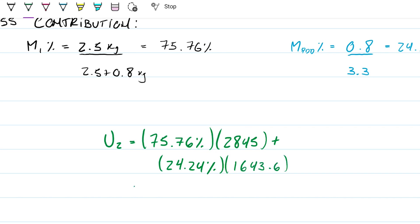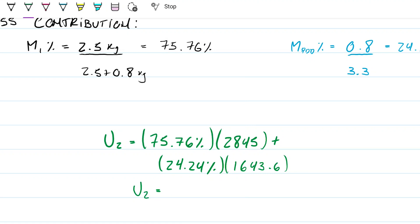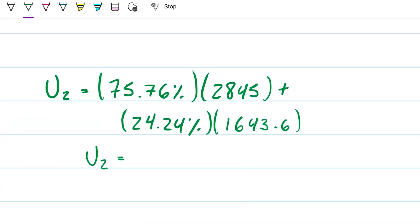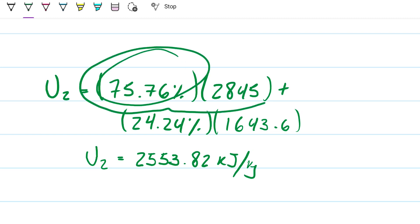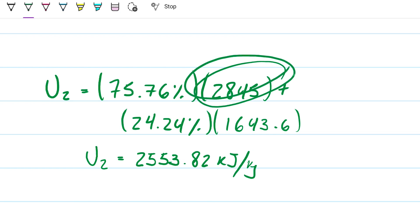That gives me that U2 is 2553.82 kilojoules per kilogram. Units need to be the same. And let's check if that makes sense. I have way more of this than I have of the other one. So therefore, it should be closer to 28 than 16. Indeed, it is. It's 25. That makes sense.